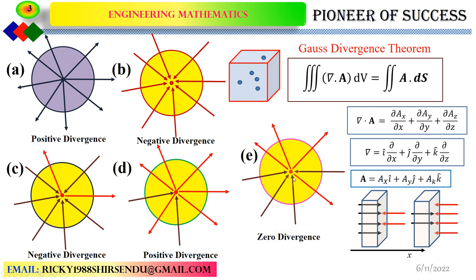Now let us discuss the Gauss Divergence Theorem. Looking at the mathematical perspective, we have a balance between a volume integration and a surface integration. The volumetric integration of divergence of a vector A — where A is given by Ax î + Ay ĵ + Az k̂ — is equated with the dot product of vector A and dS vector, where dS is any small area on a physical space.